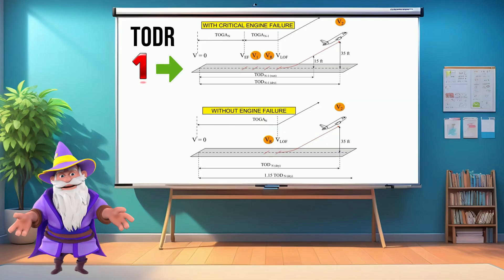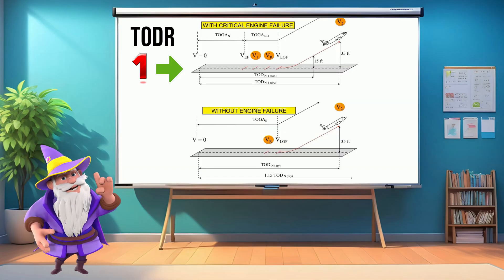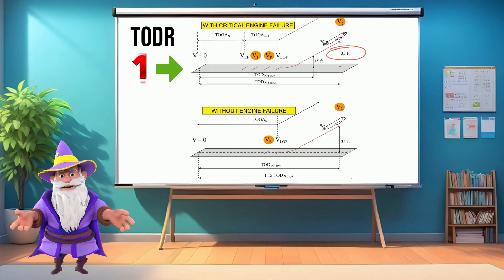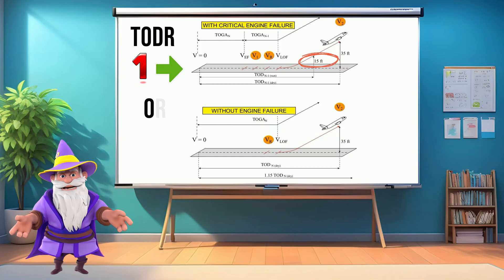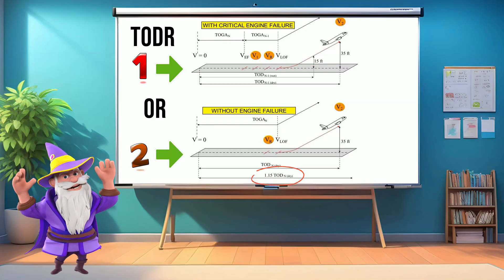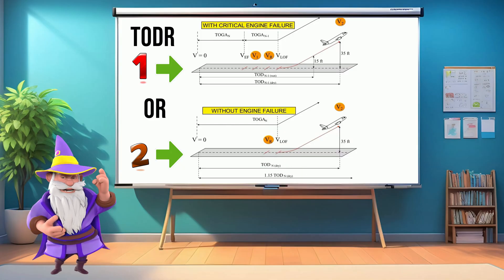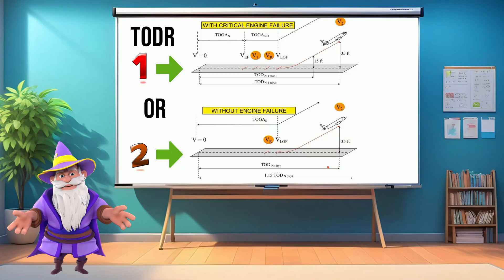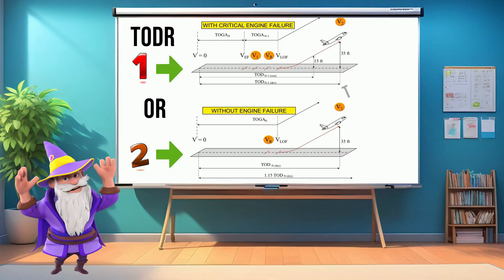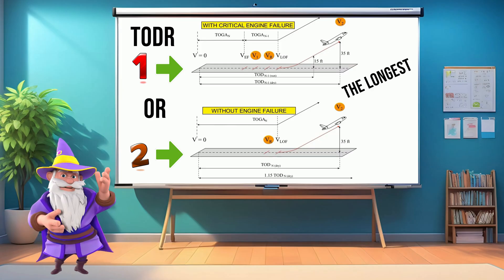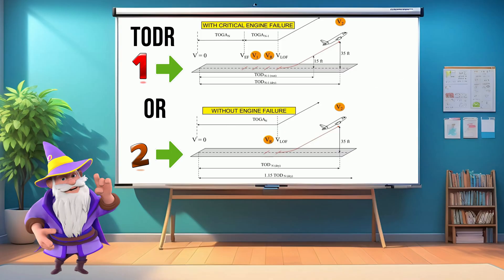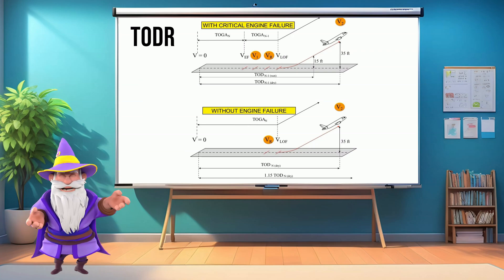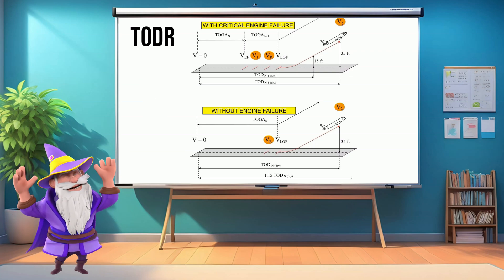Takeoff distance required is the longest of: one, the distance from the start of the ground roll to the point where the aircraft reaches a height of 35 feet and V2 speed, with one engine failure having occurred at V-ref — the screen height for wet runway in this case is only 15 feet; or two, 115% of the distance from the start of the ground roll to the point where the aircraft reaches a height of 35 feet and V2 speed with all engines operating. The longest of those two distances is your required takeoff distance. If it is shorter than the available takeoff distance, then you can take off.